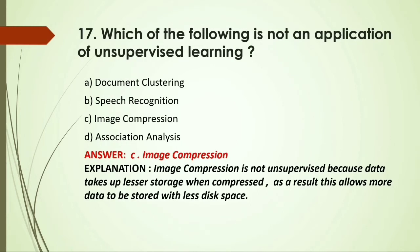MCQ: Which of the following is NOT an application of unsupervised learning? Options: A) Document clustering; B) Speech recognition; C) Image compression; D) Association analysis. Answer: C, image compression, because in image compression data takes up lesser storage when compressed, allowing more data to be stored in less disk space — it is not an application of unsupervised learning. Thank you so much. Over to Purva.